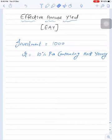Now we need to check effectively in one year how much we are earning. So we are starting with 1000 rupees and as rate of interest is 10% per annum compounding half yearly, this means our investment will generate returns of 5% in every 6 months.